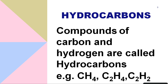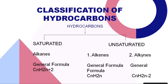We will also write IUPAC names and draw structures of alkanes, alkenes, and alkynes. Now, hydrocarbons — hydro plus carbon — shows that these compounds are made up of only two elements: hydrogen and carbon. Such compounds are called hydrocarbons. For example, CH₄ is methane, C₂H₄ is ethene, and C₂H₂ is ethyne.